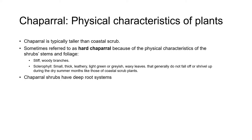Chaparral is typically taller than Coastal Scrub and is sometimes referred to as hard chaparral because of the shrubs' stiff stems and sclerophyll leaves. Sclerophyll means hard leaf and is a type of leaf seen in chaparral plant communities in all five areas of the world with Mediterranean-type climates. Sclerophyll leaves have a thick waxy cuticle and feel hard and leathery. They're often light green or grayish in color, are evergreen, and generally don't fall off or shrivel up during the dry summer months. They can live around two years, helping plants conserve energy during the long dry summer.